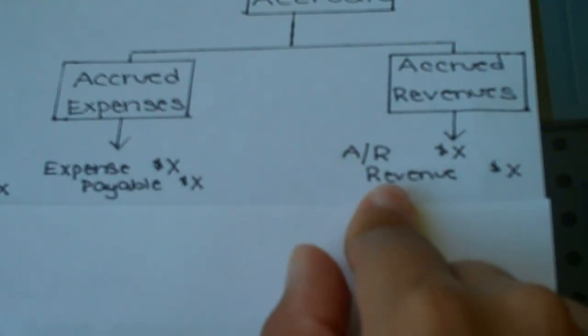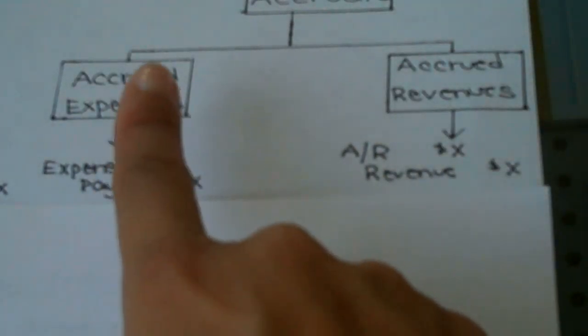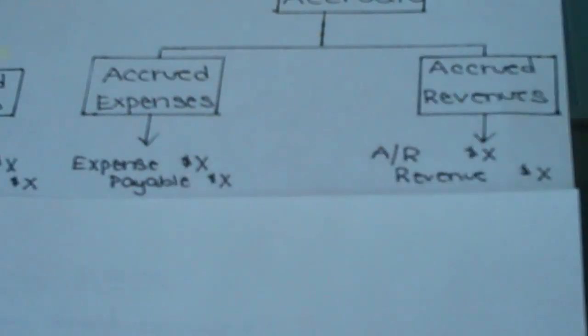And then you'd increase the offsetting revenue account. These are examples of the journal entries that need to be made at the end of the accounting period if a company has either accrued expenses or accrued revenue.